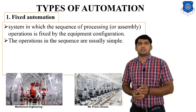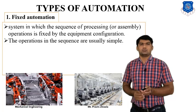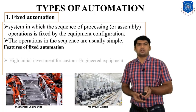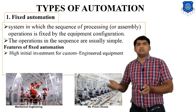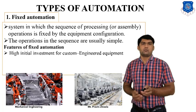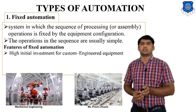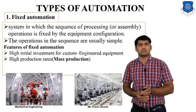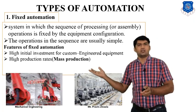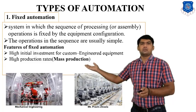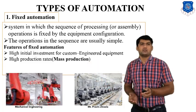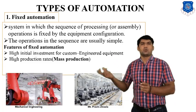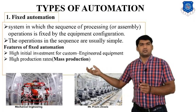In fixed automation, the sequences are usually simple, which makes it advantageous for mass production. However, the initial investment required is higher compared to simple production methods — this is a disadvantage. The advantage is a high production rate, enabling mass production of many components such as the same model of car, same model of bike, or same configuration products.